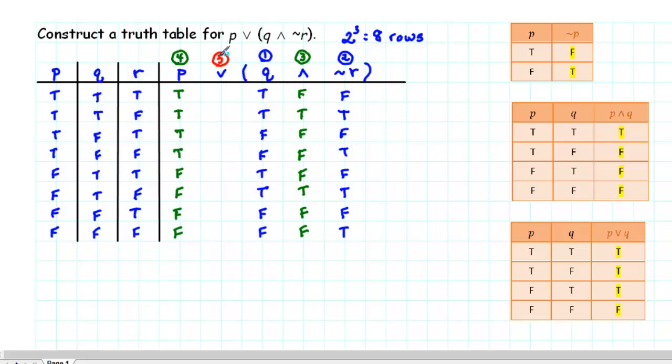Finally, the last thing we need to do is to form the disjunction of columns 4 and 3. In order to do that, recall that the only way that a disjunction can be false is if both parts are false. So what I like to do is to go through and find the rows where both parts are false and fill that in first.